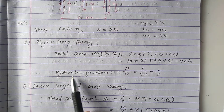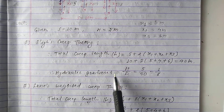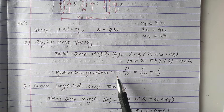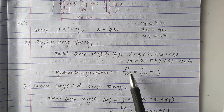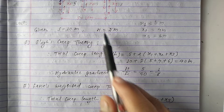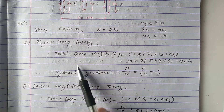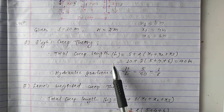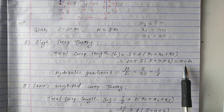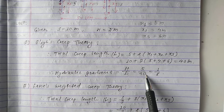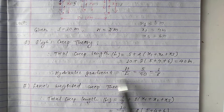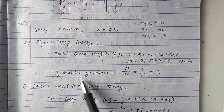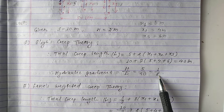Now we calculate the hydraulic gradient. The hydraulic gradient equals h divided by L. The value of h is given as 5 meters and the total creep length L is 40 meters. So the hydraulic gradient equals 5/40, which equals 1/8.